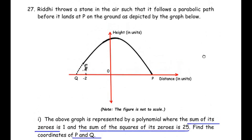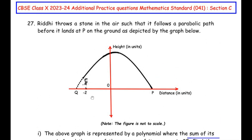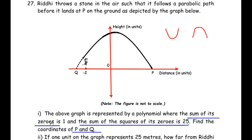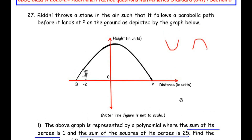Let us understand the question first. They have given us a graph where Rithi throws a stone forming a parabola. A parabola is a U-shaped or N-shaped graph and it always represents a quadratic polynomial. So this graph is a hint that we are solving a quadratic polynomial question. We are also given two hints: the sum of its zeros is 1 and the sum of the squares of its zeros is 25. Since this is a quadratic polynomial, we have two zeros, alpha and beta.